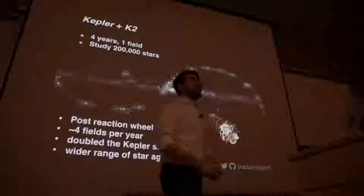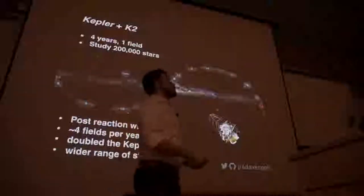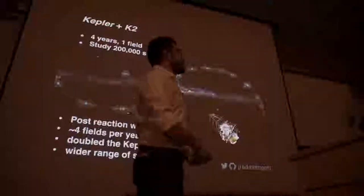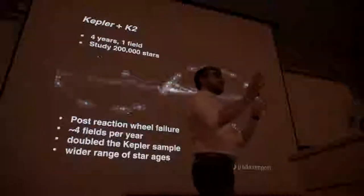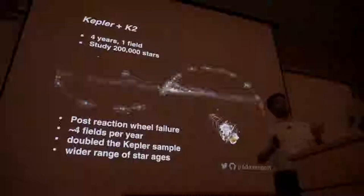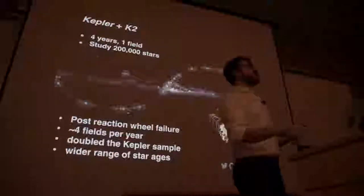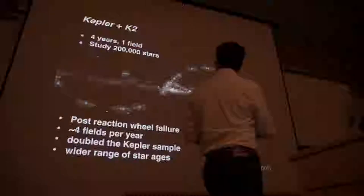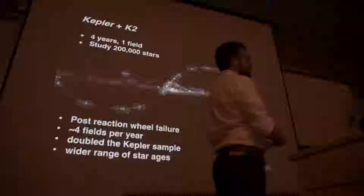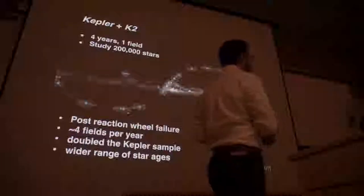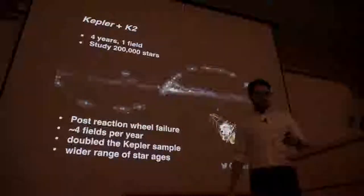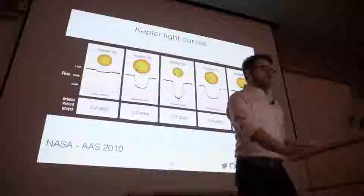Tragically, Kepler died. And like all good villains, never die once. So it was reborn into what's known as the K2 mission, where they could keep the spacecraft quasi-stable for roughly 90 days at a time, observing almost 20 fields of view over another four years. In total, about a half million stars with a revolutionary data set.